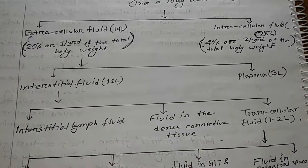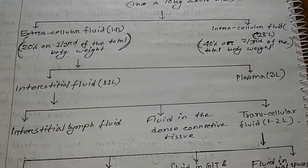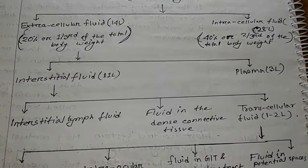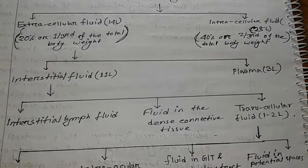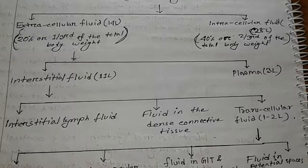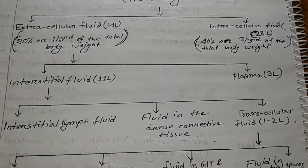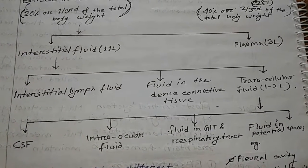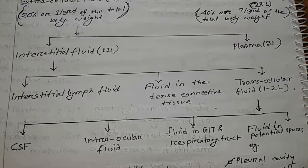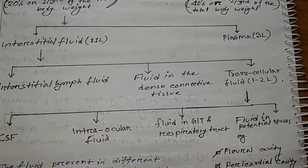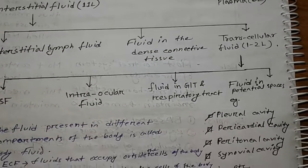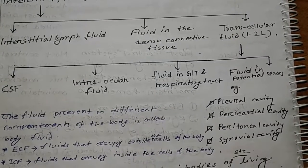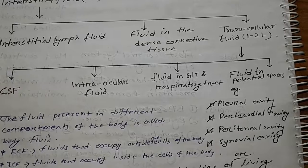Extracellular fluid (ECF) is again of two types: Interstitial fluid (11 liters) and Plasma (3 liters). Interstitial fluid is again of three types: interstitial lymph fluid, fluid in dense connective tissue, and transcellular fluid (1–2 liters). Transcellular fluid is again of four types: CSF, intraocular fluid, fluid in GIT and respiratory tract, and fluid in potential spaces. Examples of potential spaces: pleural cavity, pericardial cavity, peritoneal cavity, and synovial cavity.